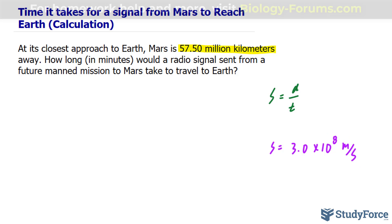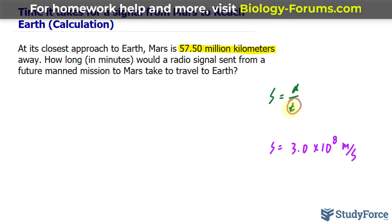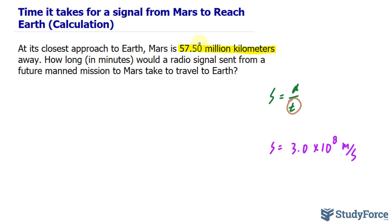What we are looking for is the time. So what I'll do now is substitute this value in for S. And at the same time, I'll convert 57.50 million kilometers into meters so that it matches the units here. Notice that here the units are in meters per second, whereas our value, the distance, is in kilometers. So let's go ahead and convert this number.